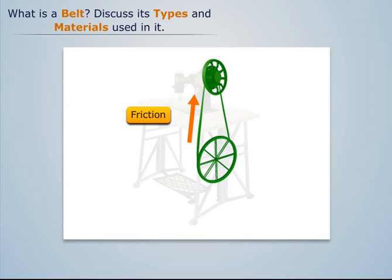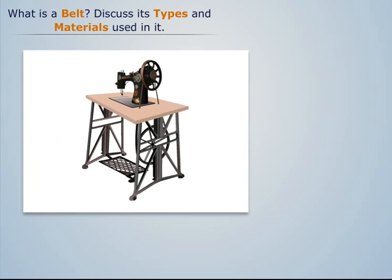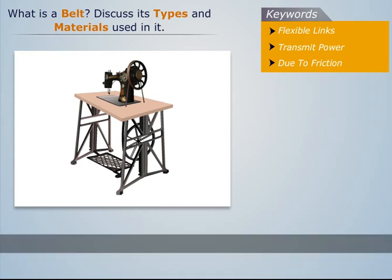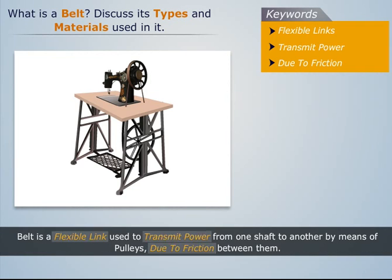Due to friction between the rope and the wheels, the rope used here is a flexible link and an example of a belt. Thus, a belt is a flexible link used to transmit power from one shaft to another by means of pulleys, due to friction between them.